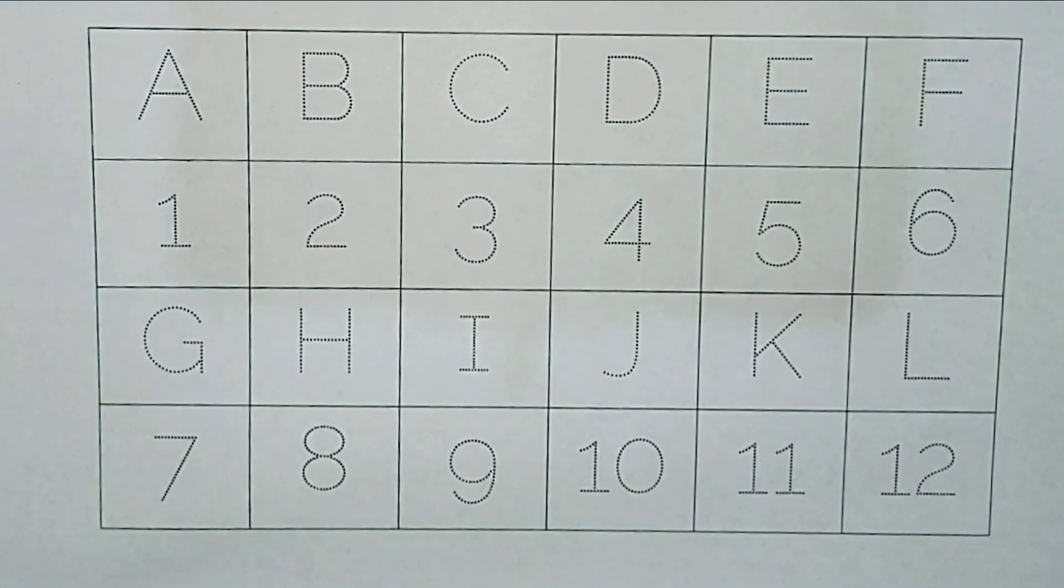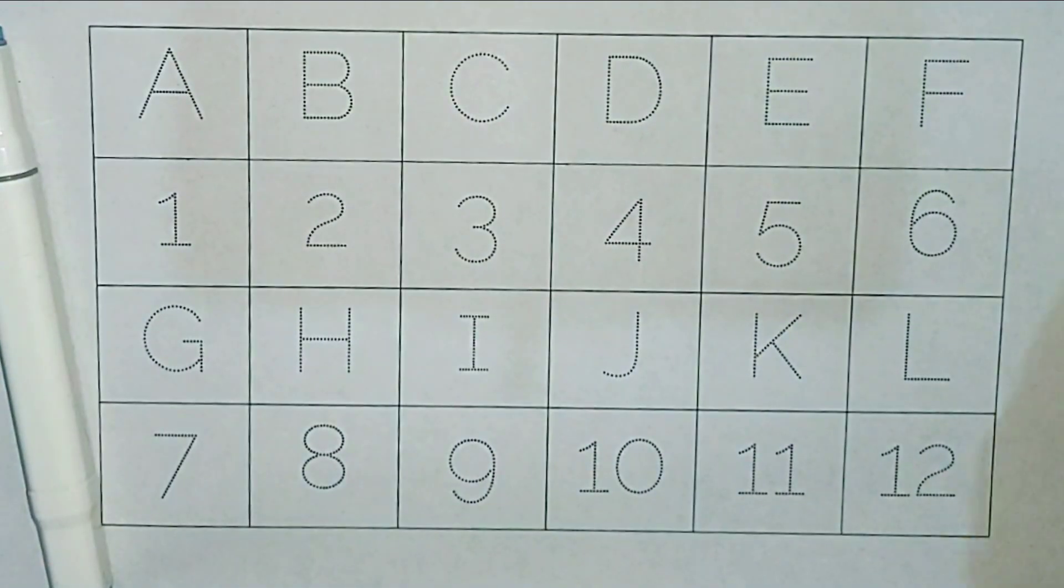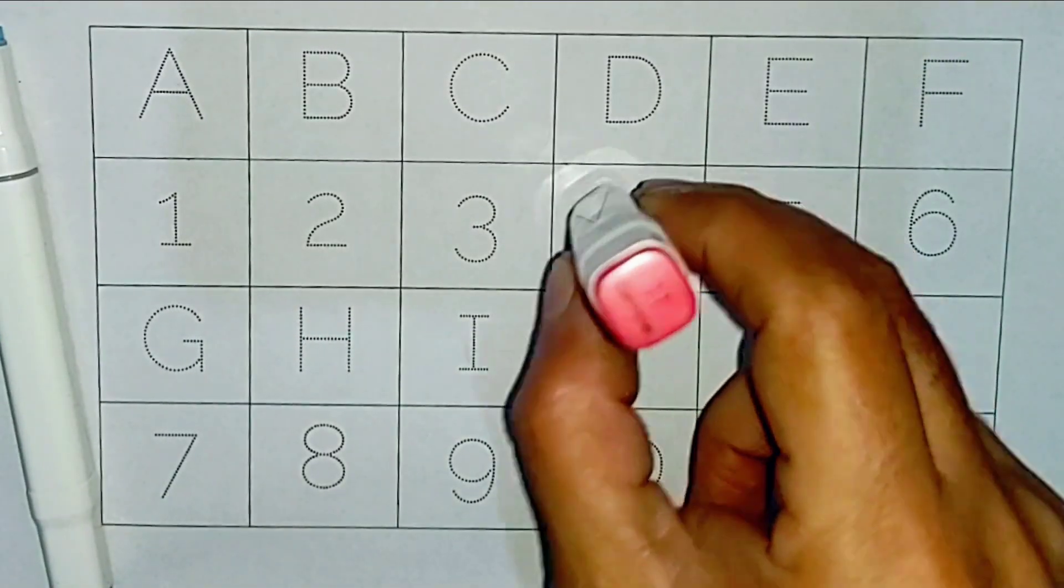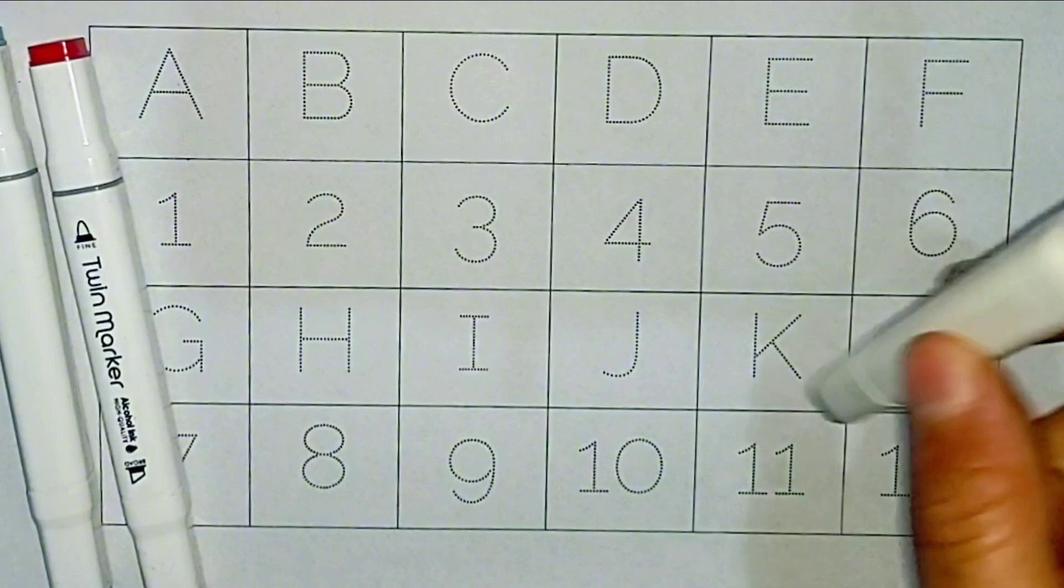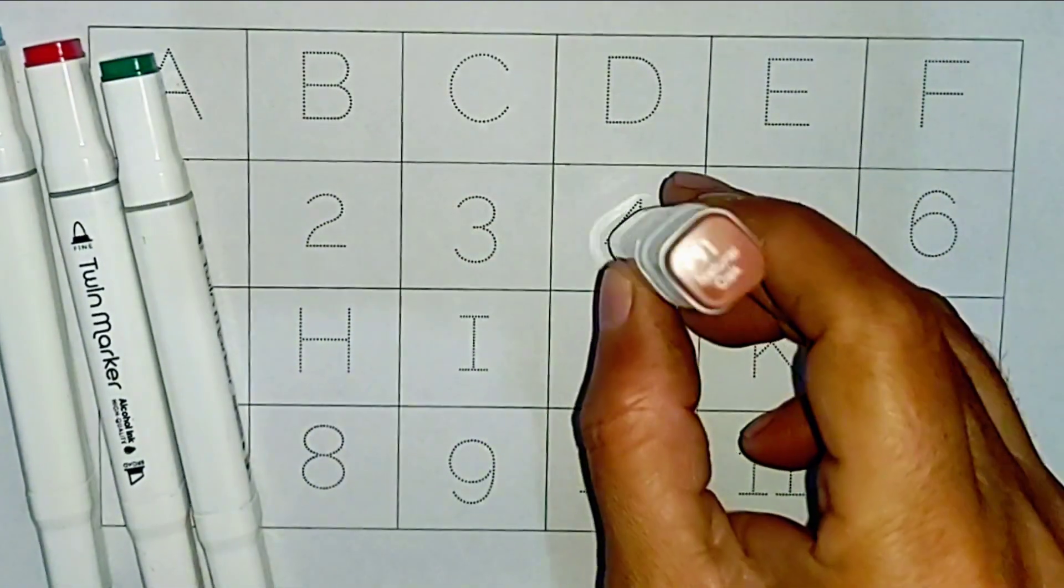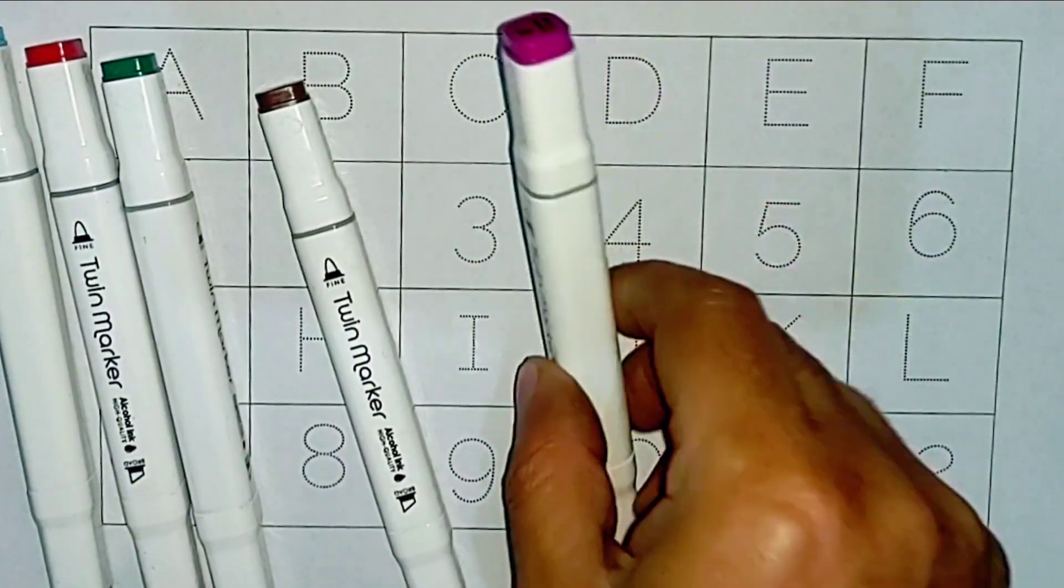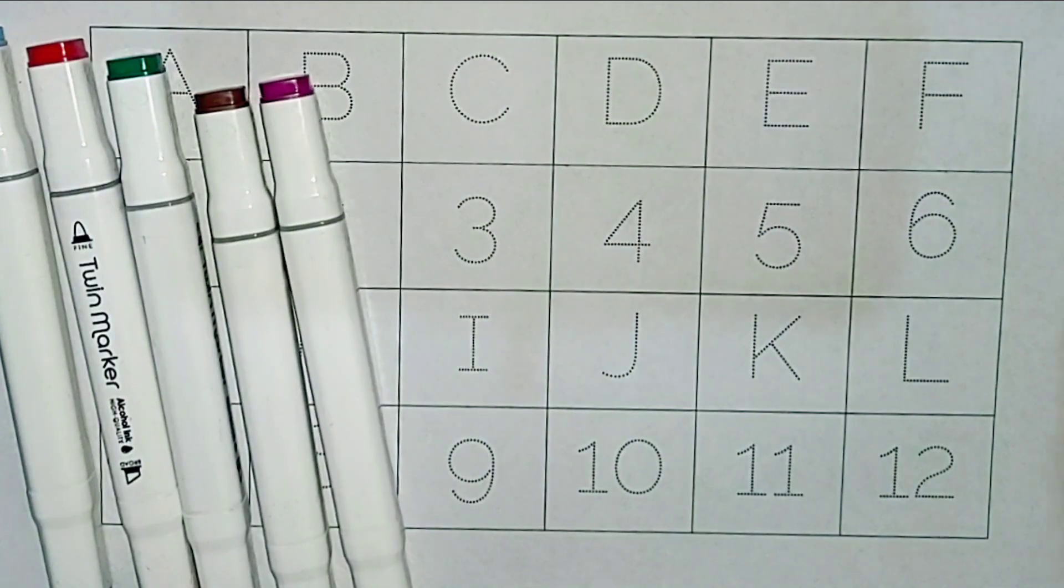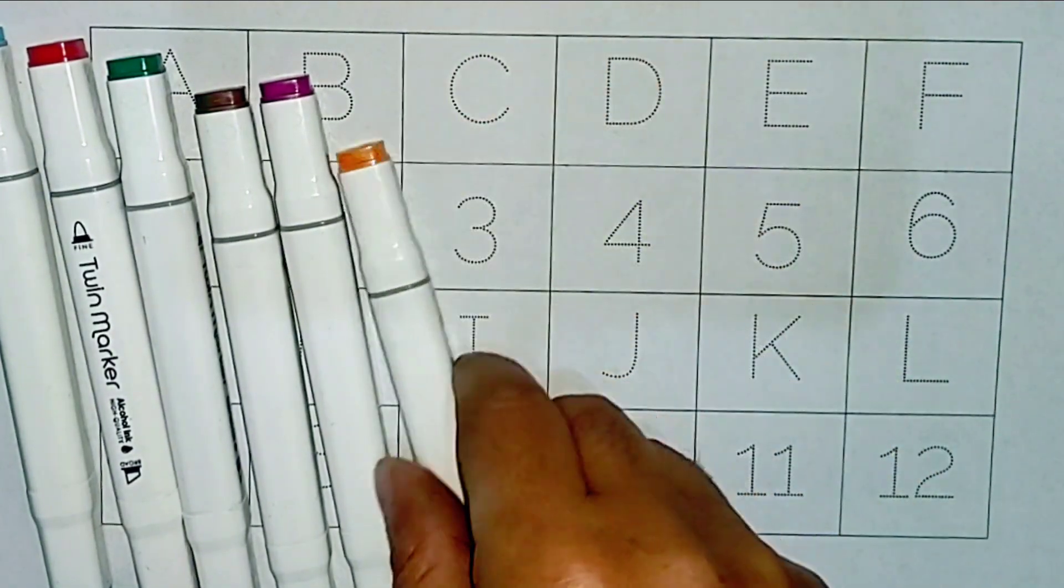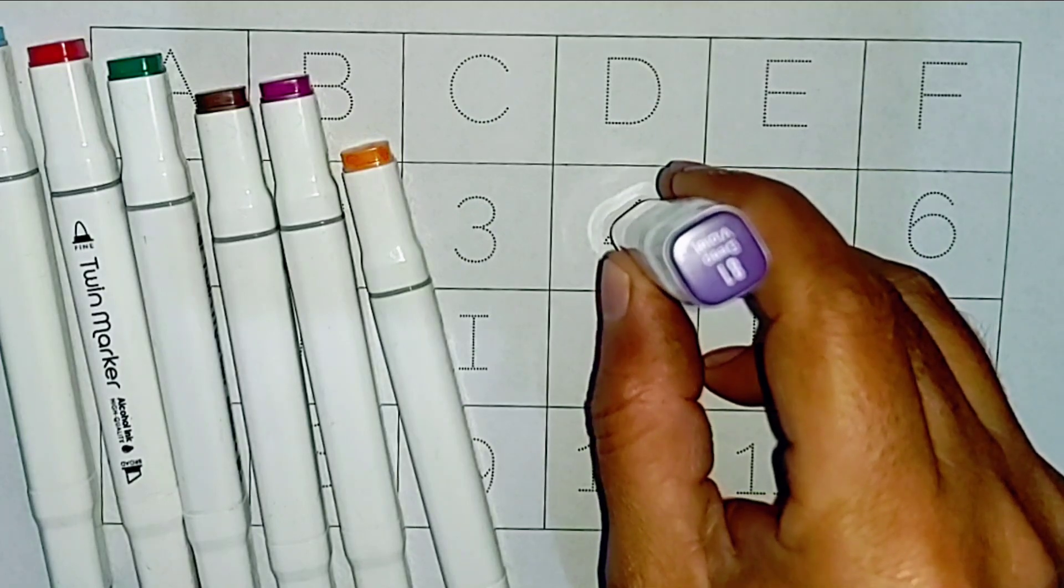First, we start from colors name: light blue color, red color, green color, brown color, purple color, orange color, violet color.